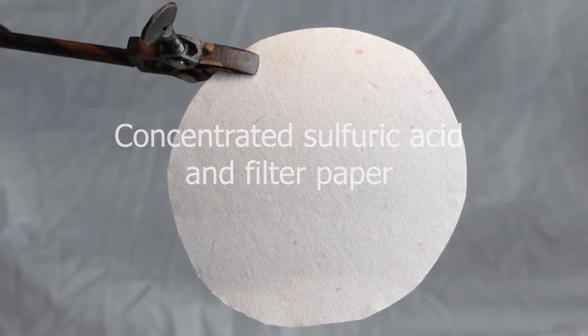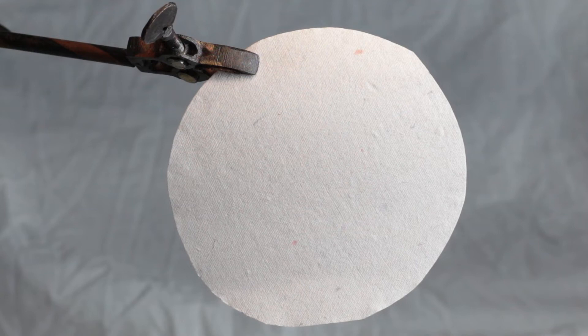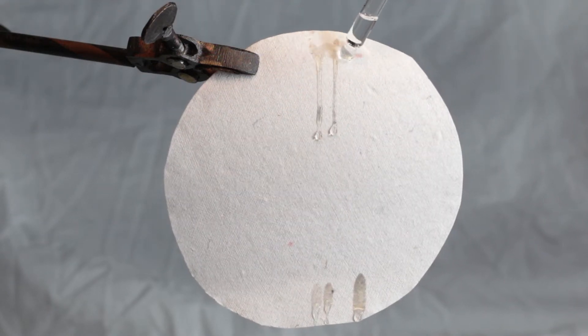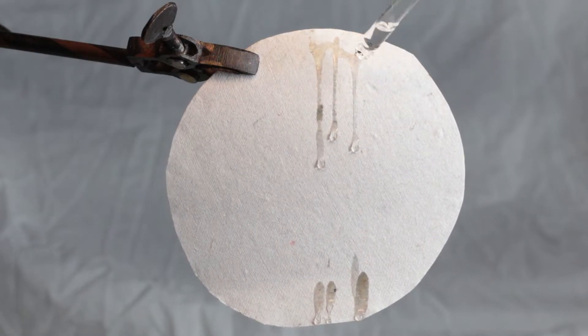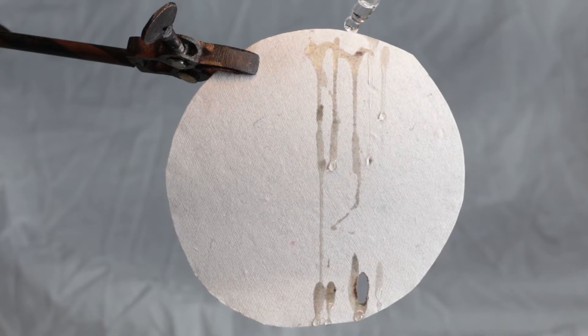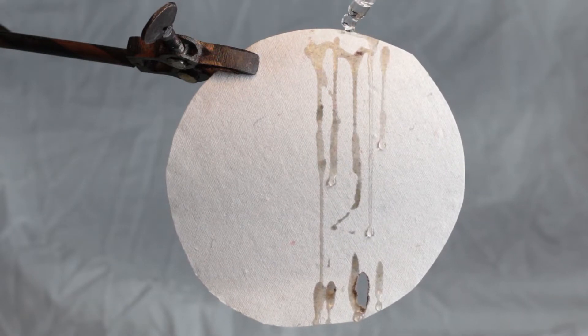But the most interesting is not how it can dry wet substances, it's how it can extract water from substances which are not wet at all. They have water as part of their structure, carbohydrates like cellulose in this case.